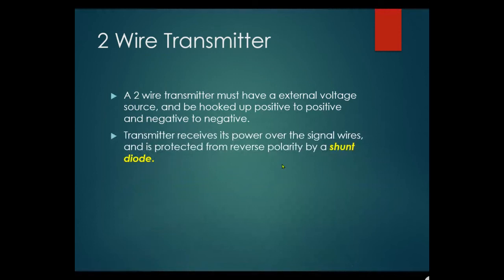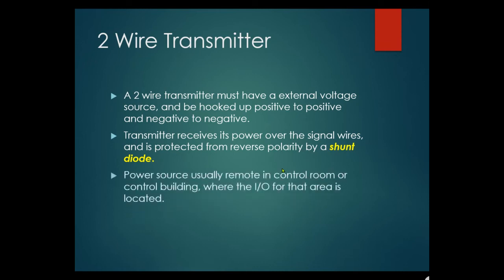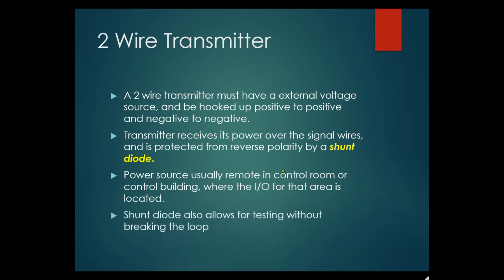The transmitter receives its power for overall signals and is protected from reverse polarity by a shunt diode. Power sources are usually remote in the control room or control building. The shunt diode also allows for testing without breaking the loop.